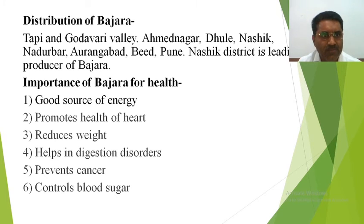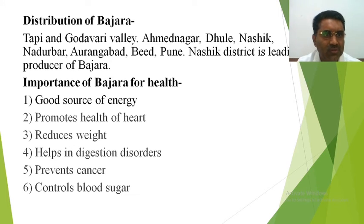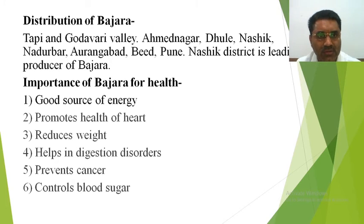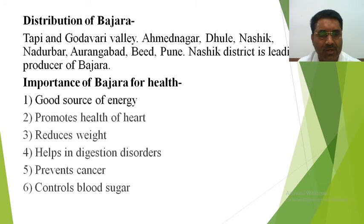Now let us see the distribution of bajra — where it is grown. The important areas are the Tapi and Godavari valleys, which have favorable soil conditions for crop growing. The important districts are Ahmadnagar, Dhule, Nasik, Nandurbar, Aurangabad, Beed, and Pune — these are the leading districts where bajra crops are grown.